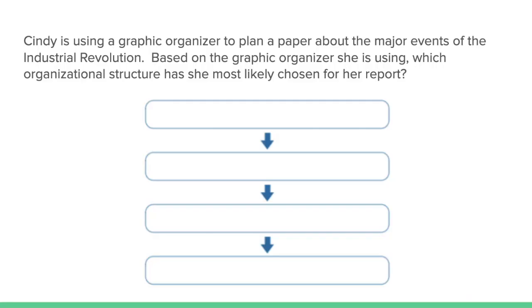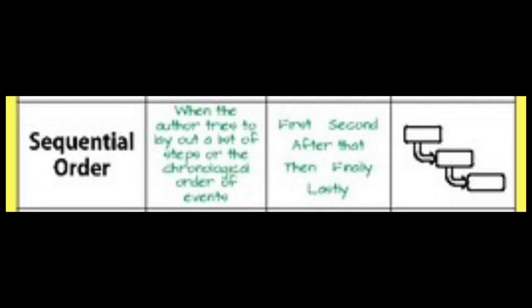Next graphic organizer: Cindy is using a graphic organizer to plan a paper about the major events of the Industrial Revolution. Based on the graphic organizer she's using, which organizational structure has she most likely chosen? We've got four rectangles with rounded corners and three arrows pointing down — one, then the next, and the next, and the next, telling us there's some sort of order. The text structure she's most likely chosen is sequential or chronological order.